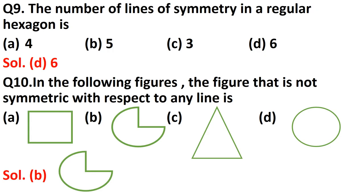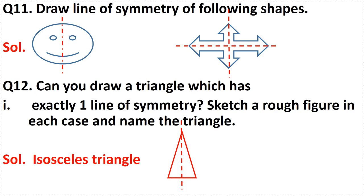Question number eleven: draw the lines of symmetry of the following shapes. Two shapes are given, one mark each, so this question carries two marks. Check if you have made the lines of symmetry in the same way as shown. Give one mark for each shape for a fully correct answer. If in the second figure you have drawn only one line of symmetry, then give half marks for that.